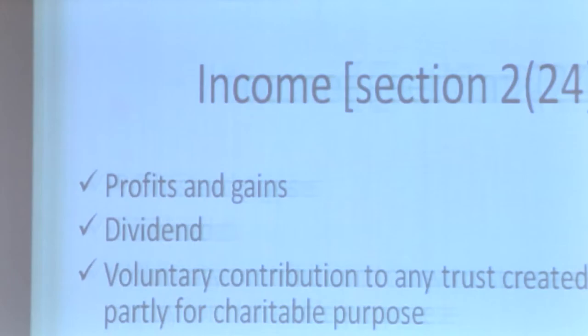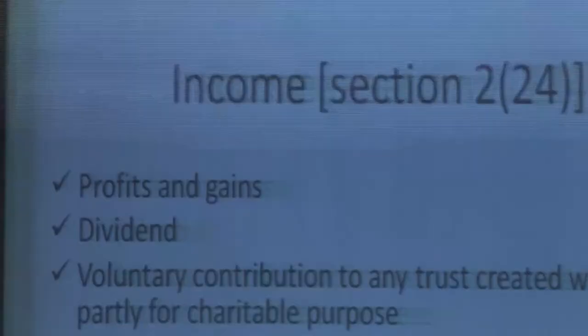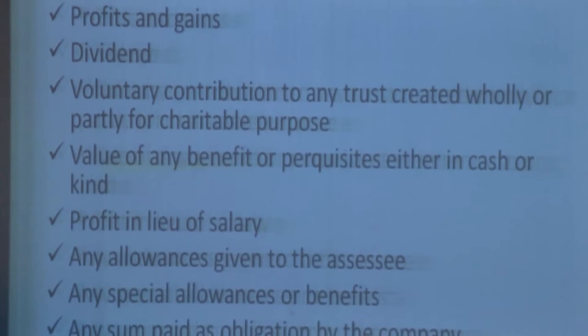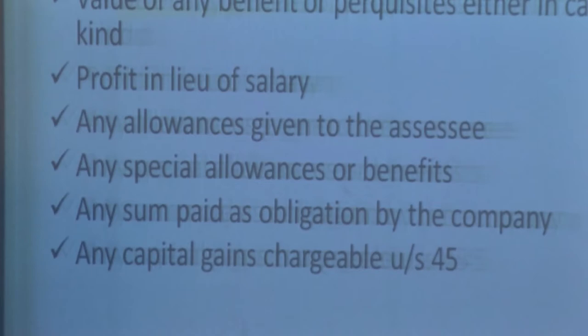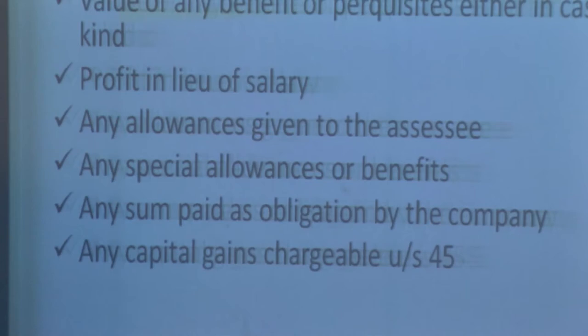Under Section 2 sub-section 24, income includes: profits and gains of business; dividend; voluntary contributions to any trust created wholly or partially for charitable purposes; value of any benefit or perquisite either in cash or kind; profit in lieu of salary; any allowances given to an assessee, or any special allowances or benefit; and any sum paid as an obligation by the company.